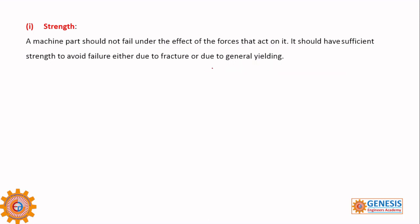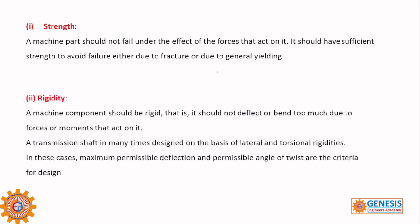The next consideration is rigidity. You must have heard about rigidity. There is torsional rigidity and flexural rigidity. From the EI point of view, it is called flexural rigidity. GJ — that is the modulus of rigidity and polar moment of inertia — is called torsional rigidity. These we have learnt from the bending equation as well as the torsional equation.